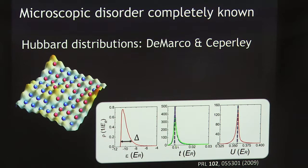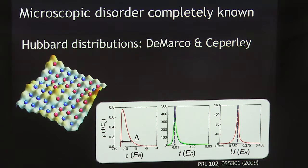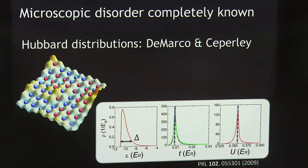Here are probability distributions for those different Hubbard parameters. The tunneling energies get broadened around the clean value, and that disorder is quite significant. The interactions are only slightly disordered. This is a particular case of quite strong disorder — almost the maximum disorder we can apply for a particular lattice depth — and there's only a tiny fractional amount of disordering in the interaction energy. Most theorists when they work on our system typically ignore this. The site energies have a one-sided exponential-like distribution, and you can think of the disorder parameter delta as measuring the standard deviation of that distribution.